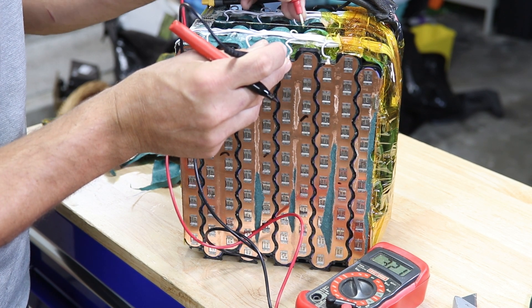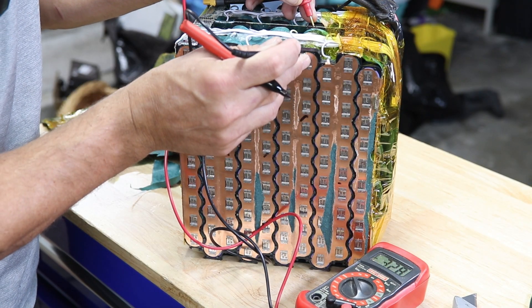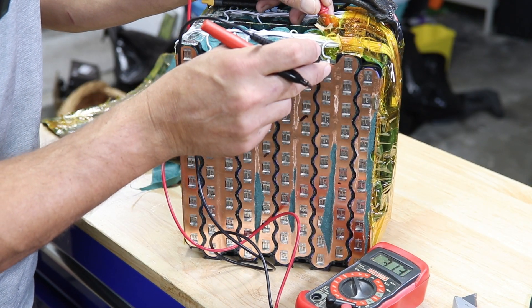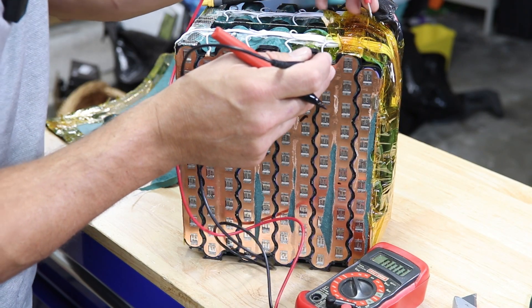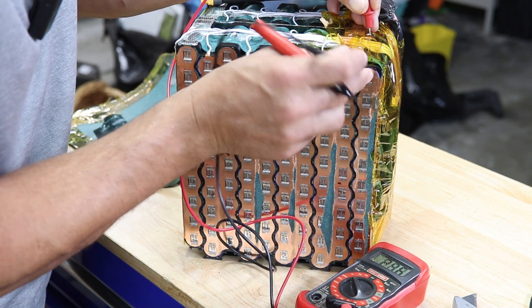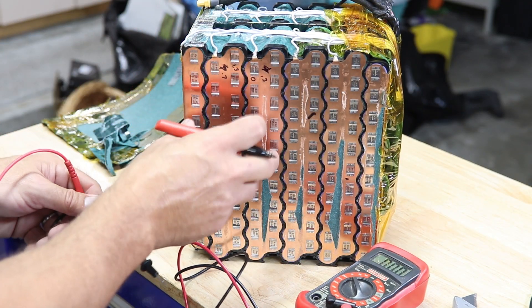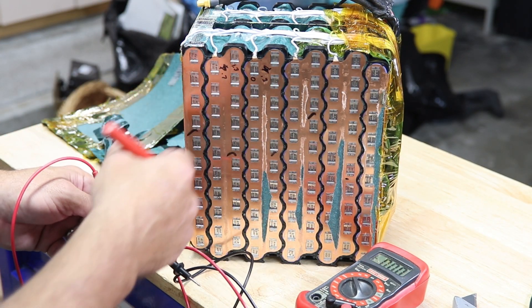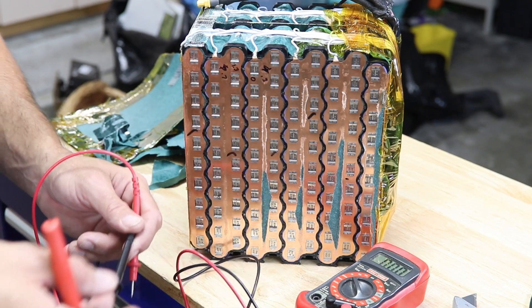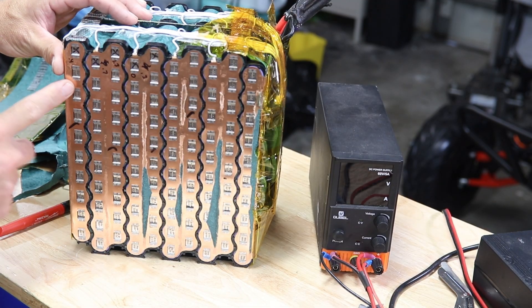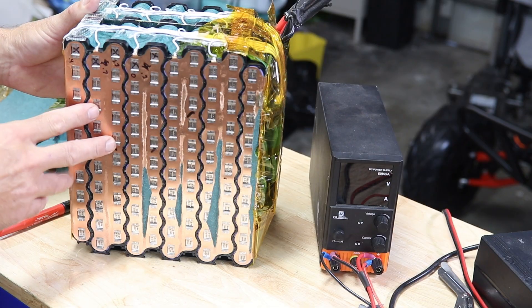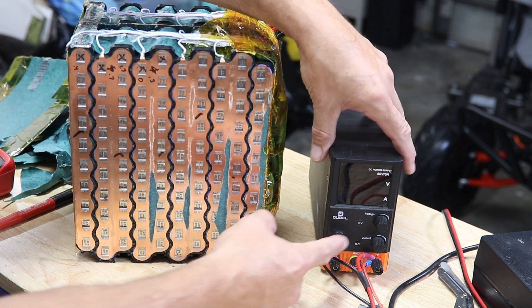3.21, 3.3, 3.1, 3.2. So we've kind of identified our area here, a couple bad groups. Let's go ahead and check the rest. Got them all labeled now. We know which groups we need to hit with the charger.